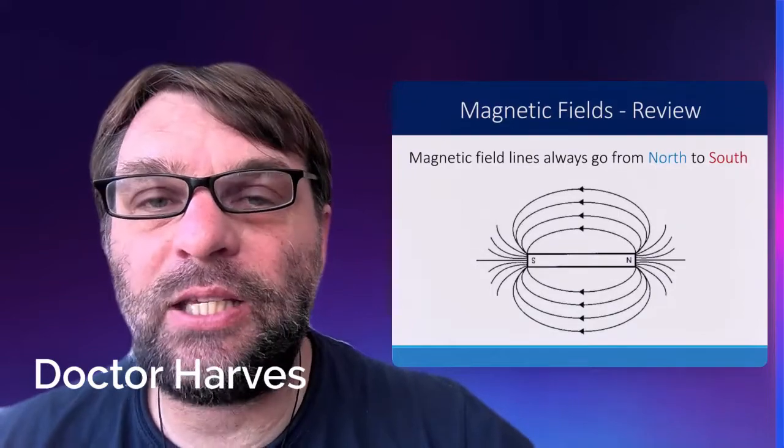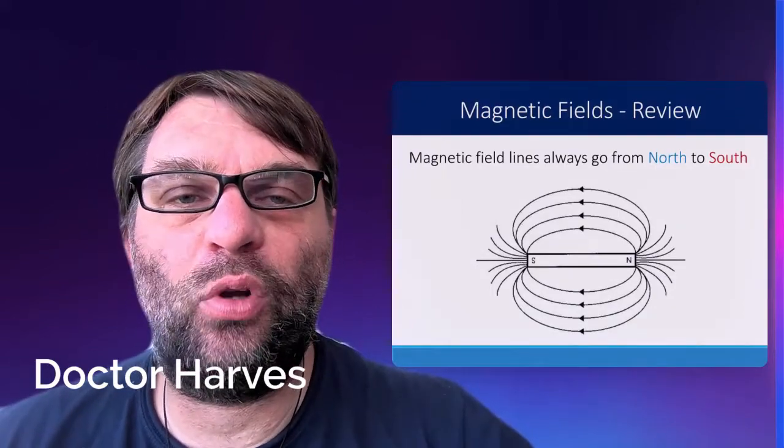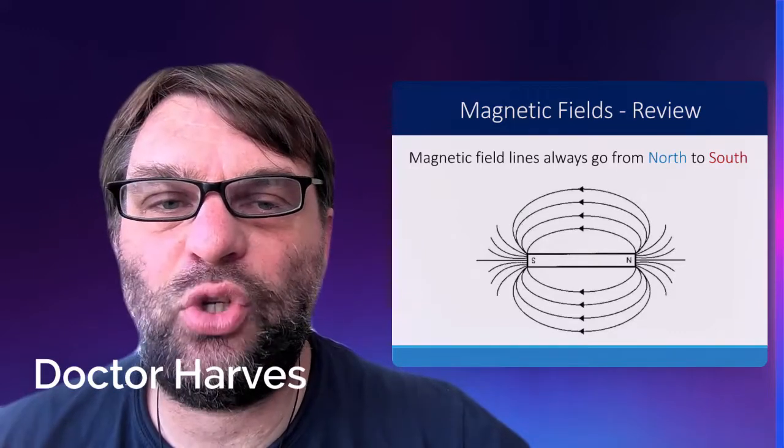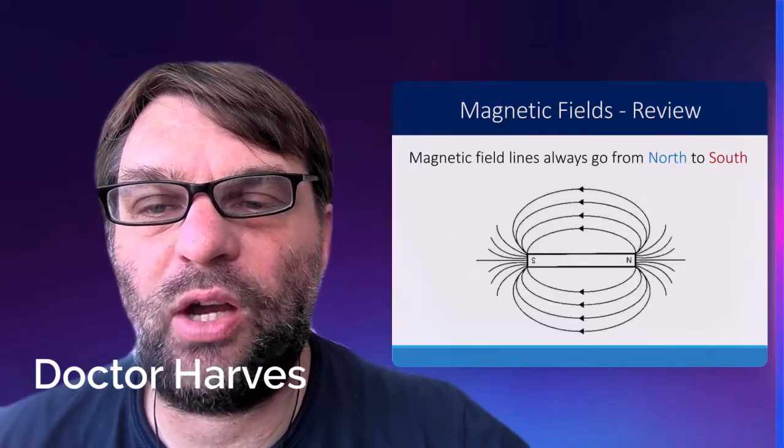Just reviewing last lesson, we learned that magnetic field lines always go from north to south, as you can see by the arrows in the diagram for this bar magnet.